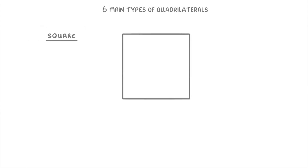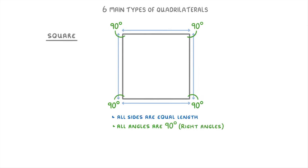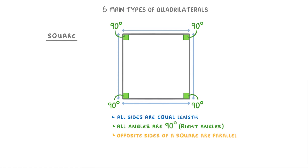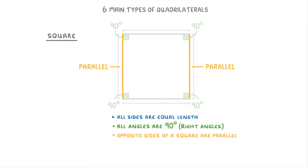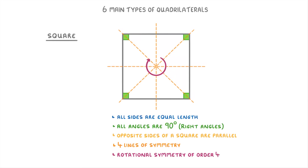Starting with the square, their main features are that all four sides are equal length and all four angles are 90 degrees — right angles — which we can show by putting little squares in the corner. Also, the opposite sides of a square are parallel to each other, which means they travel in the same direction. These two sides are parallel because they're both vertical, and these two sides are parallel because they're both horizontal. Squares also have four lines of symmetry and a rotational symmetry of order 4, meaning there are four positions in which they look the same as you rotate them through a complete 360 degrees.